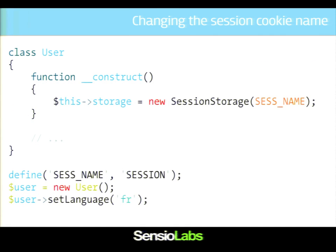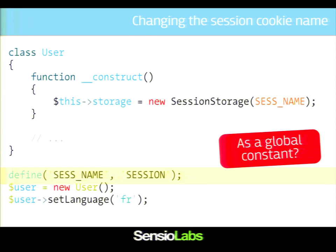There is one way to slightly improve things: instead of hard-coding the session name as a constructor argument, what I can do is create a global constant. It is much better because now I can configure — I can change the value of the session name from the outside. It's not hard-coded anymore into the user class. Is it better really? It's very difficult to test now, because if you need to define a constant, it's global, so you can't change the value by definition.